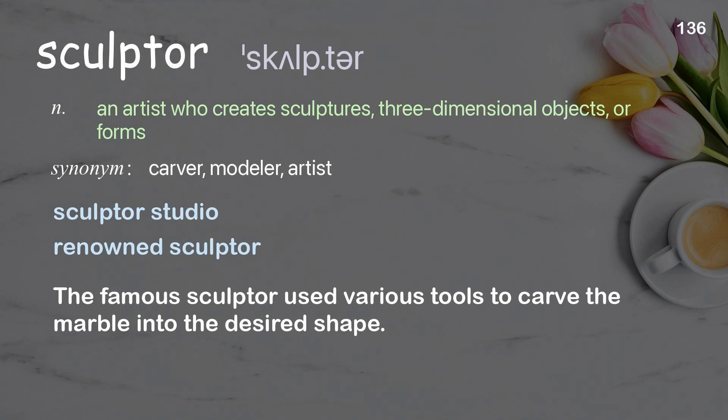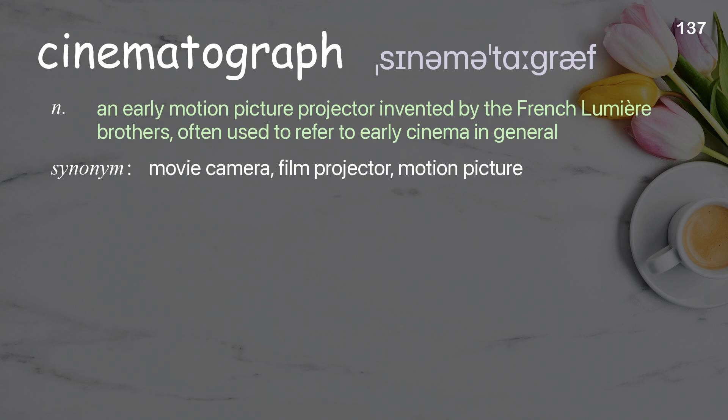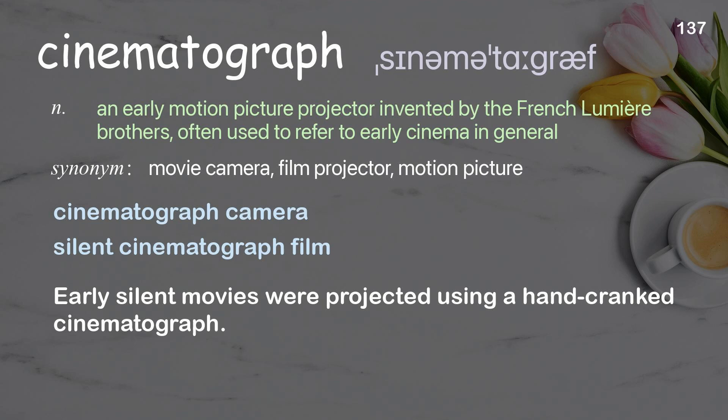Cinematograph: an early motion picture projector invented by the French Lumière brothers, often used to refer to early cinema in general. Examples: cinematograph camera, silent cinematograph film. Early silent movies were projected using a hand-cranked cinematograph.